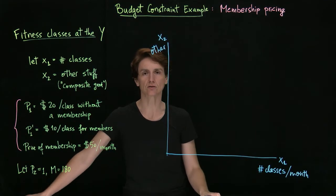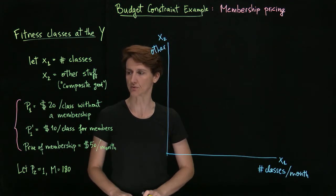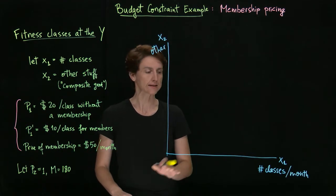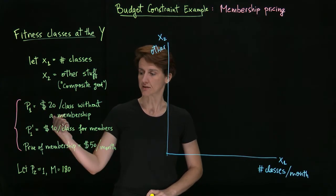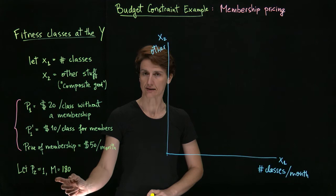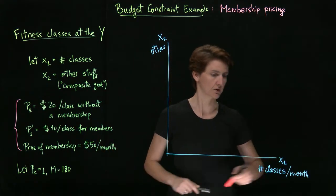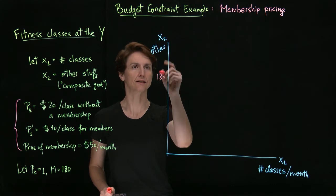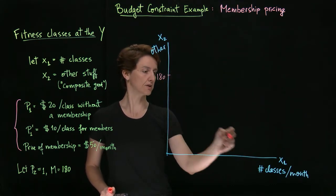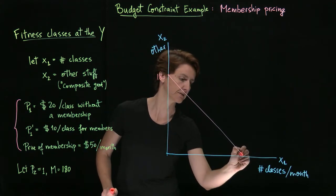Suppose we have a hundred eighty dollars to work with. Then there are two distinct budget constraints to show, right? Let's think about what they'll look like. First, if we don't have the membership, if the price is twenty and we have a hundred and eighty dollars, then that means we could buy at most nine classes, right? So if we don't buy any classes, we can spend the full hundred and eighty dollars on other things, which cost a dollar each. Or if we spend all of that money on classes, that would allow us to buy nine of them.